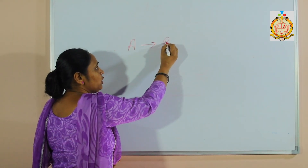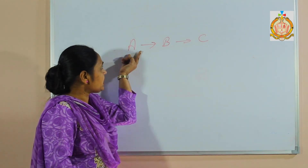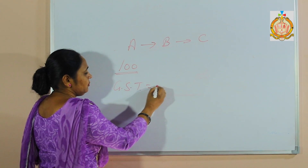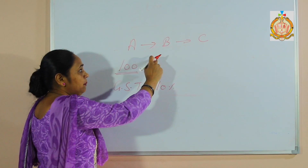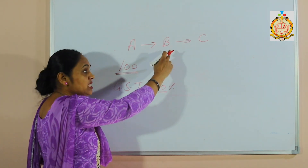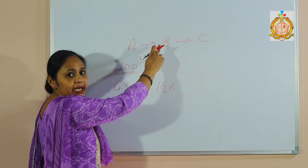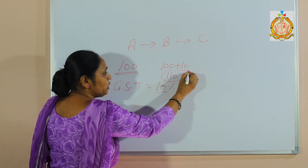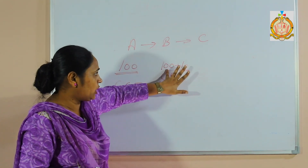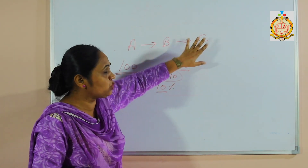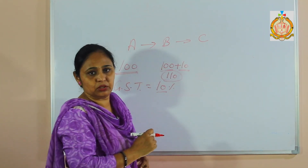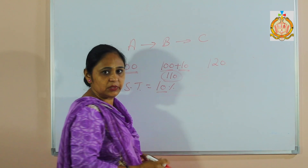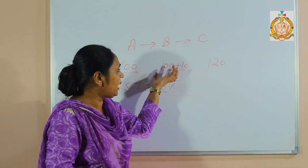Suppose there is a person A. He sells the product to B, then B sells it to C. Now A sells a 100-rupee item to B. GST rate is 10%. B is buying, so B pays the GST. So B pays 100 + 10% = 110 rupees. Now B buys at 100 rupees and pays GST of 10 rupees.